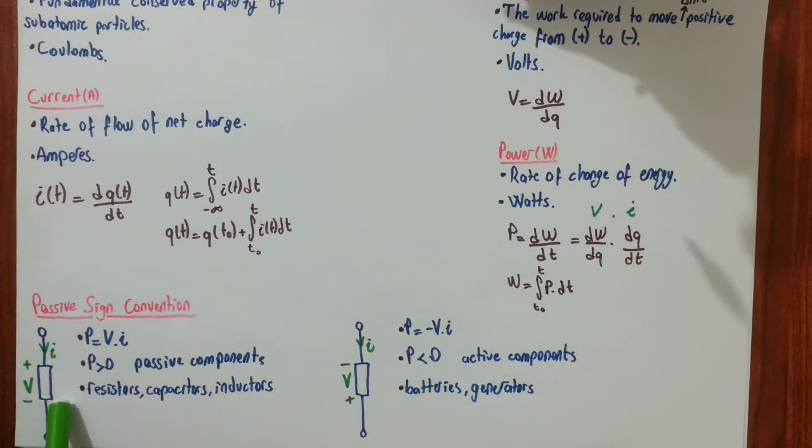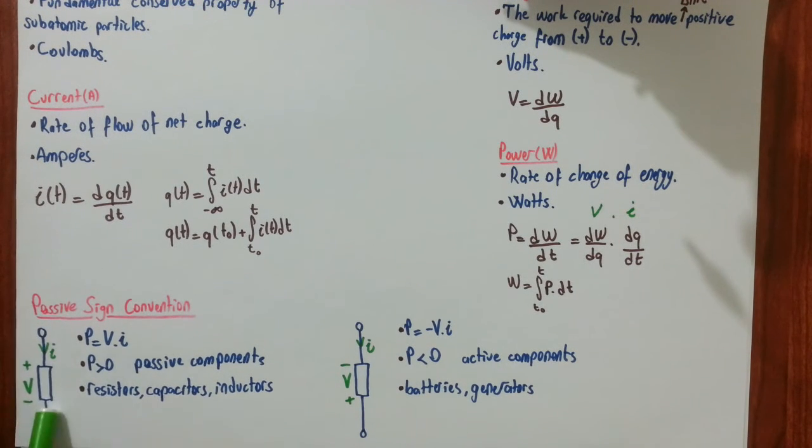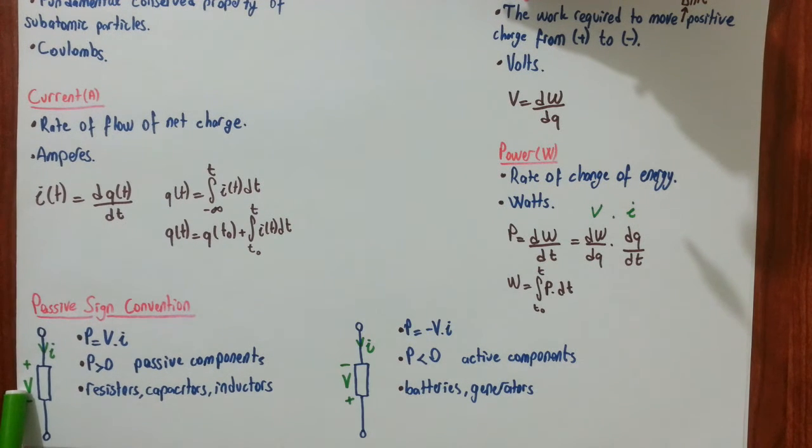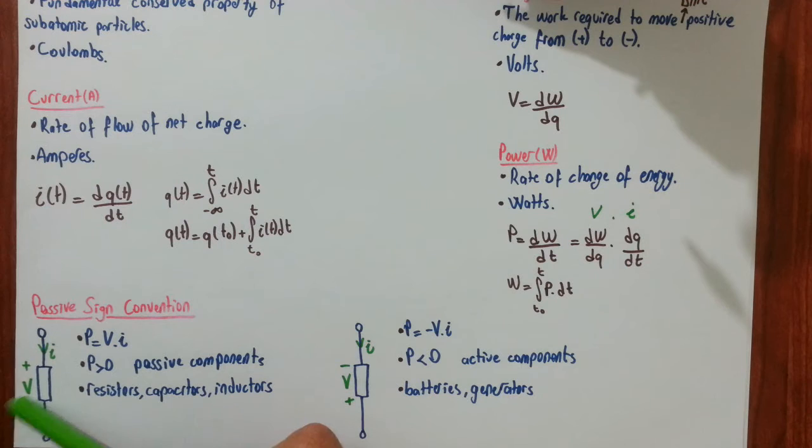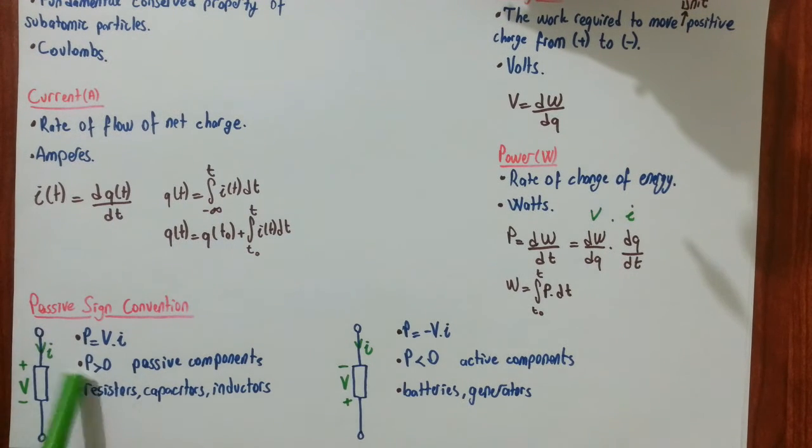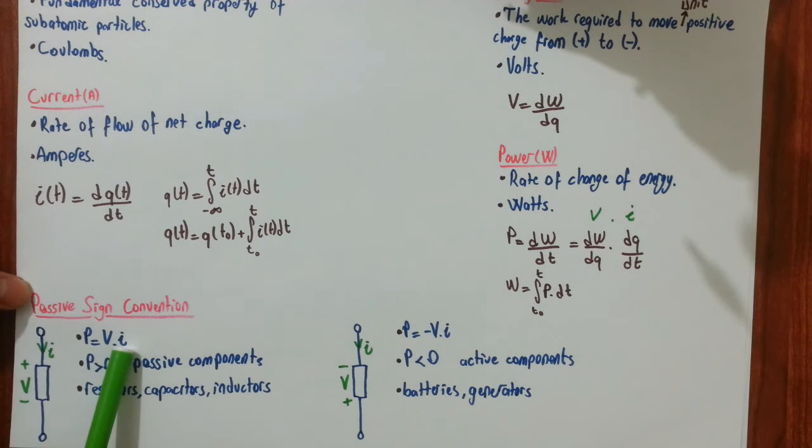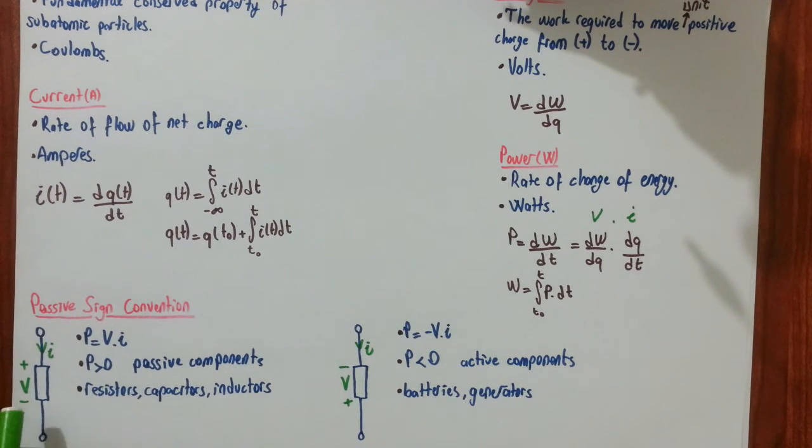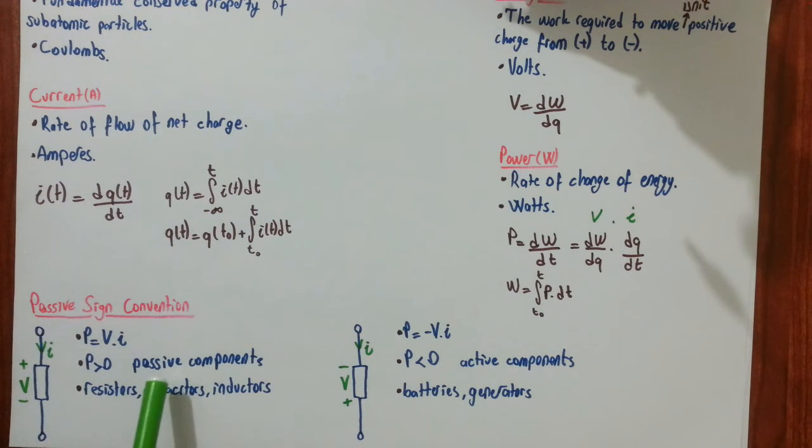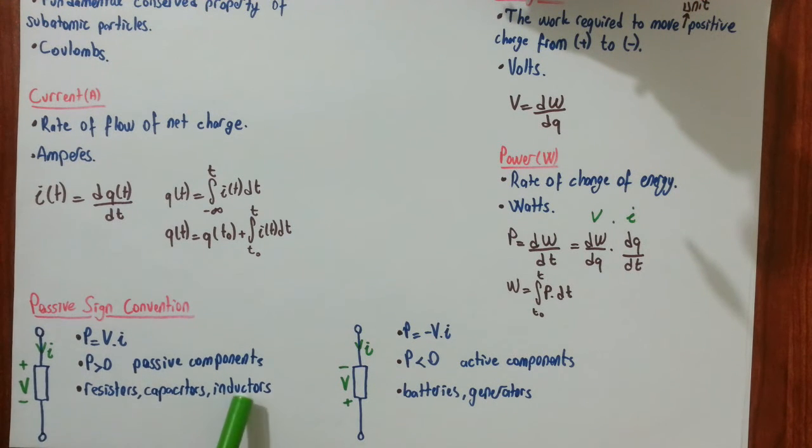Passive sign convention says that, assume that this is our component and it has a voltage difference across its terminals and it's denoted by V. If current enters from its positive terminal and leaves from its minus terminal, the power of this component is defined to be V times I. And if you multiply V by I, notice that I and V are absolute values. They are positive. And if you multiply them, you get a power with positive value. If the power of the component is positive, the component is said to be passive component. And resistors, capacitors, and inductors are examples of the passive components.